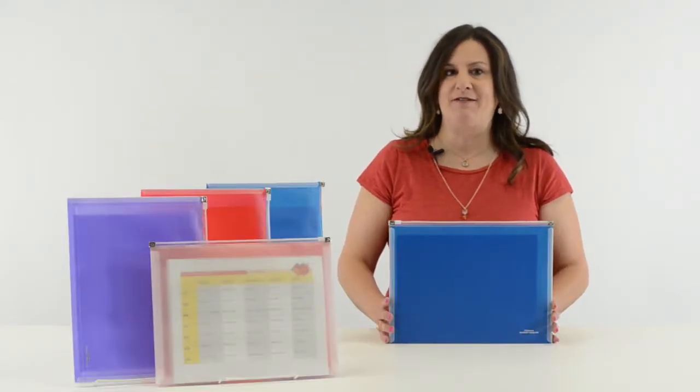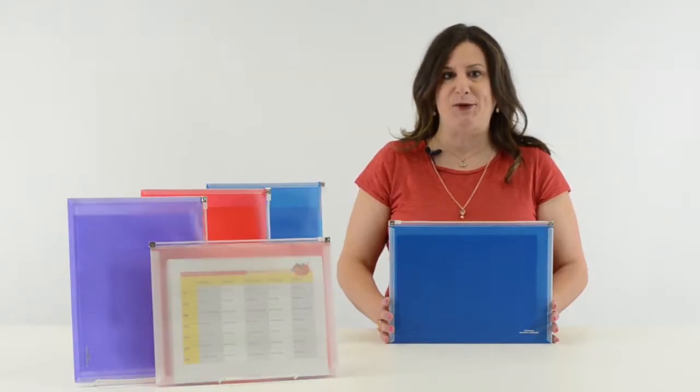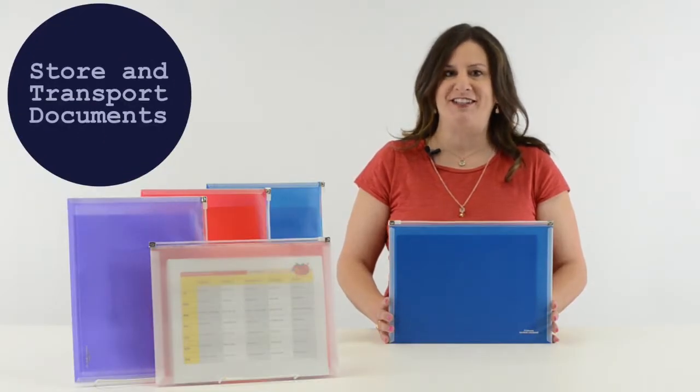C-Line Zip & Go Reusable Envelopes are made from acid-free polypropylene and are perfect for storing and transporting your letter-sized documents.